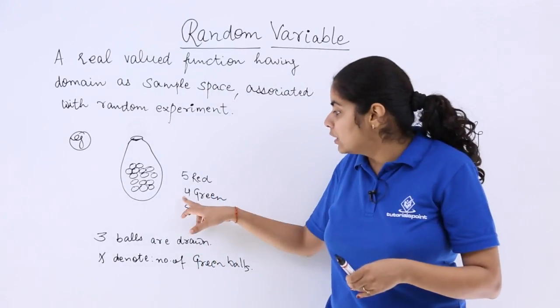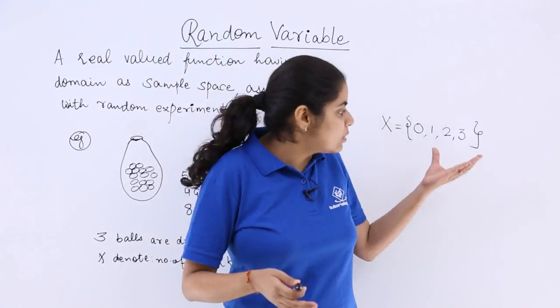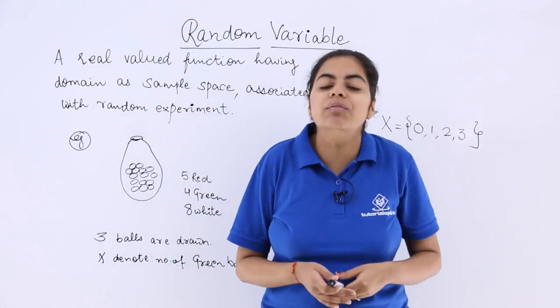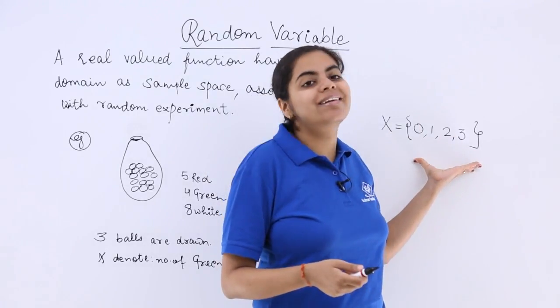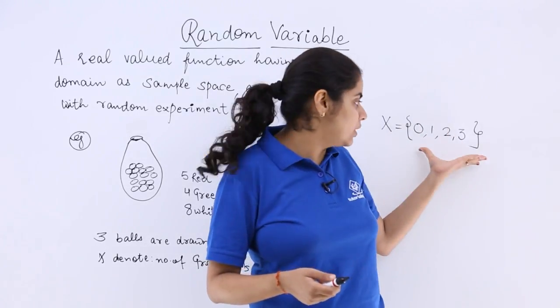Why I have not written 4 because here it says 3 balls are drawn. So at max the 3 balls can be drawn which can be green. So in this manner we say x is a random variable with a range as 0, 1, 2, 3 the set.